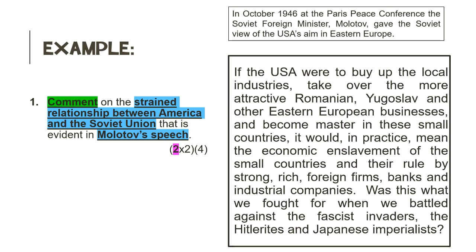Okay, so now let's quickly read the source together. While we read, try to think about what parts we should highlight to help us with our interpretation. Remember, we are looking for evidence of tension between America and the Soviet Union. The source says: 'If the USA were to buy up the local industries, take over the more attractive Romanian, Yugoslav and other Eastern European businesses and become master in these small countries, it would, in practice, mean the economic enslavement of the small countries and their rule by strong, rich foreign firms, banks and industrial companies. Was this what we fought for when we battled against the fascist invaders, the Hitlerites and the Japanese imperialists?'